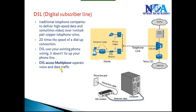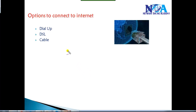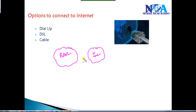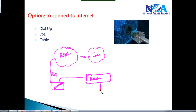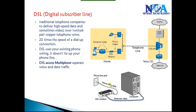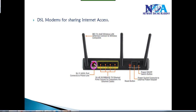Looking at DSL subscriber lines: if you take an internet connection from a telecom operator — for example, BSNL or Airtel in India — they provide an RJ11 wire, sometimes along with a landline phone. There is also a splitter which connects to your wireless router so you can share internet access between devices. A typical DSL modem has an RJ11 connector where the telephone line comes in, plus LAN ports for sharing the internet connection.